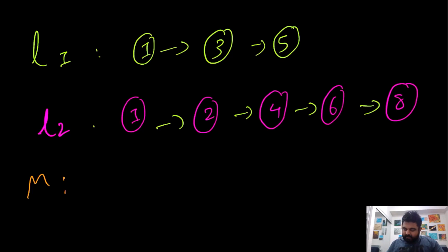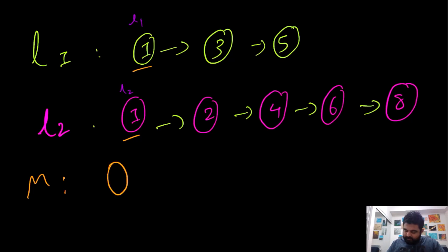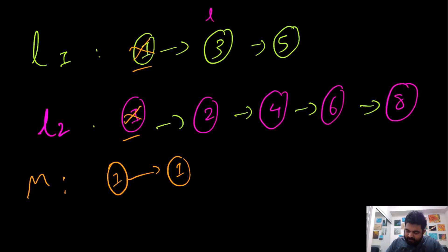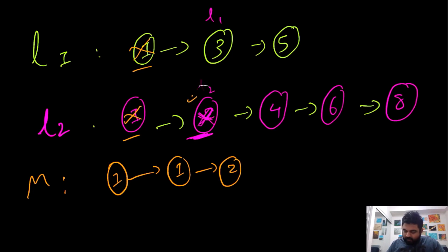Let me draw one more list to explain the approach. We'll call the merged list M. At any given moment we compare two values using two pointers, L1 and L2. Both start at one, so we enter one, then another one since both values are the same. We update L1 and L2 to point to their next elements and compare again. The smaller value is added to the merge list.